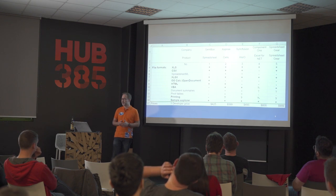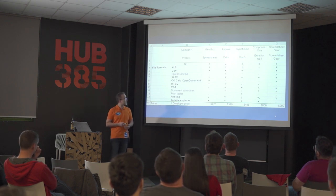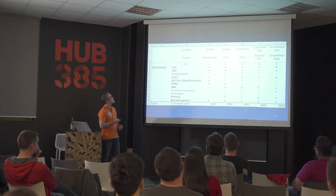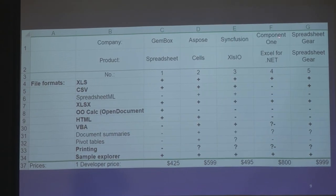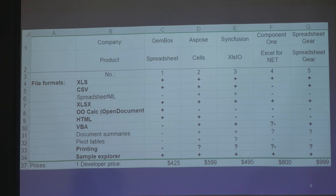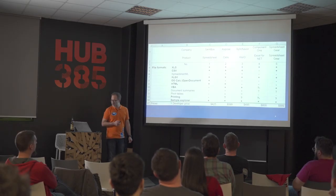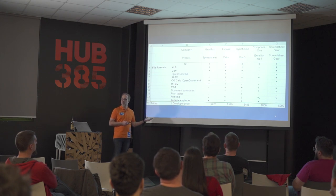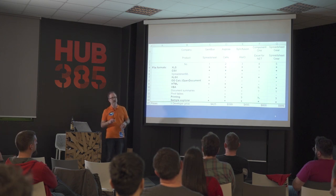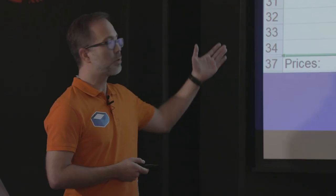What you do is use spreadsheet software and put all your competitors in the columns. In the Jambox spreadsheet, my product and competitors — Aspose, SpreadsheetGear, and SyncFusion — are the columns, and in the rows we put the features of each product. Our product is a .NET component for programmers to import and export Excel files. At the bottom of the comparison table we have the price, so I priced my product to be competitive with others in the market.